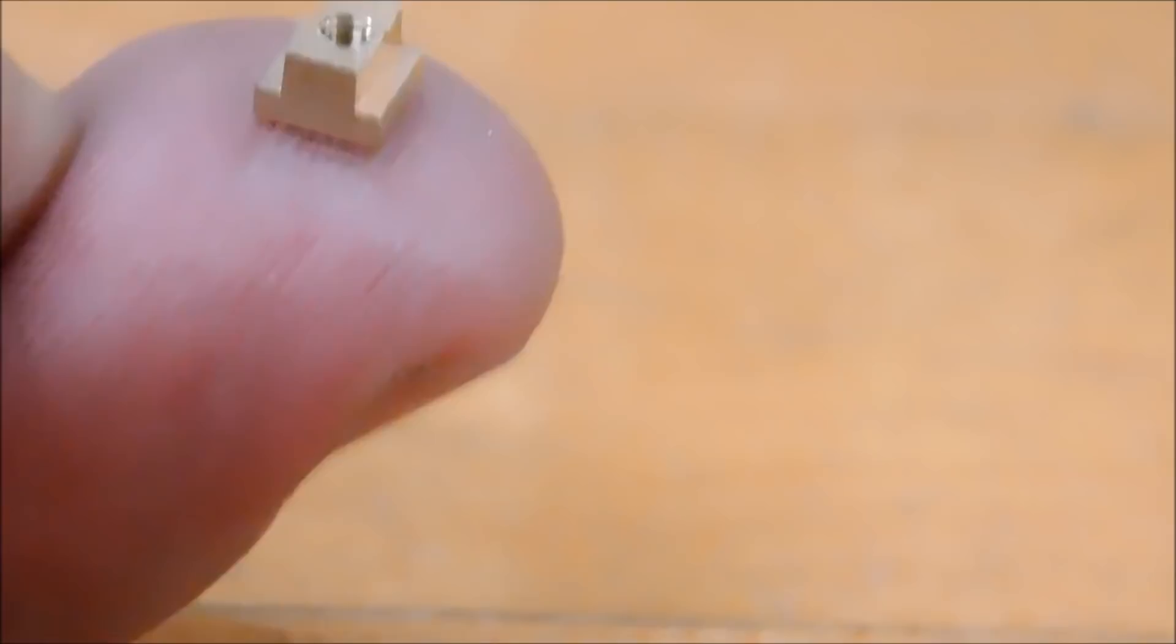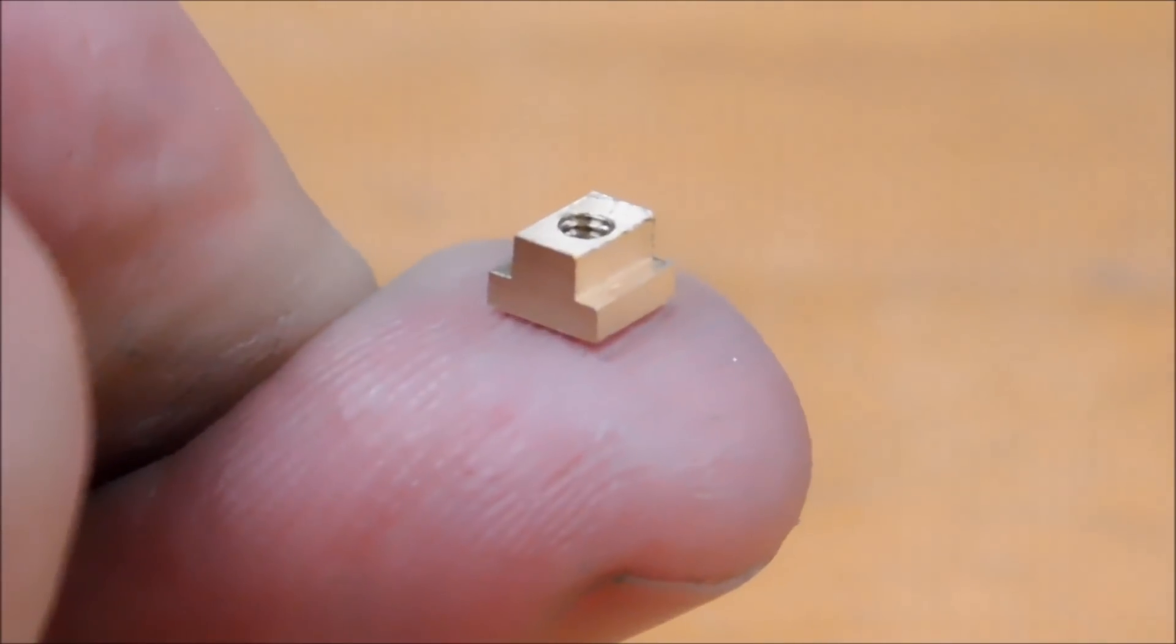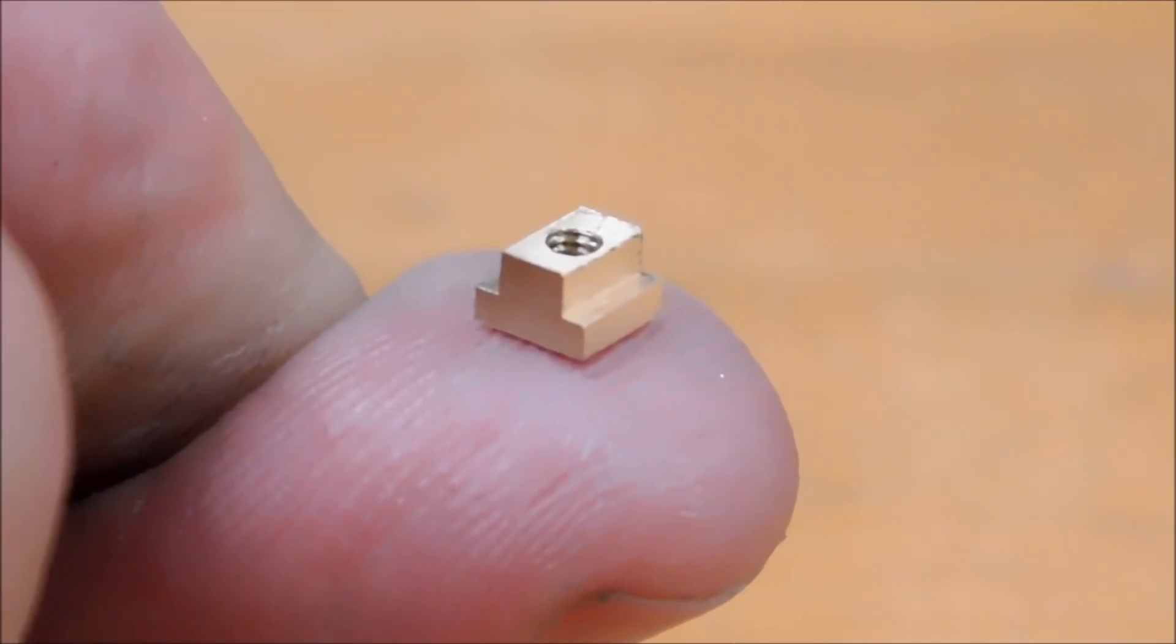All right, well, there you go. I think one of my spiders is probably going to run away with this tonight and build himself a miniature mill. Two millimeter T-nut done with a one-inch end mill. Give it a shot. Trust your numbers. Thanks for watching.